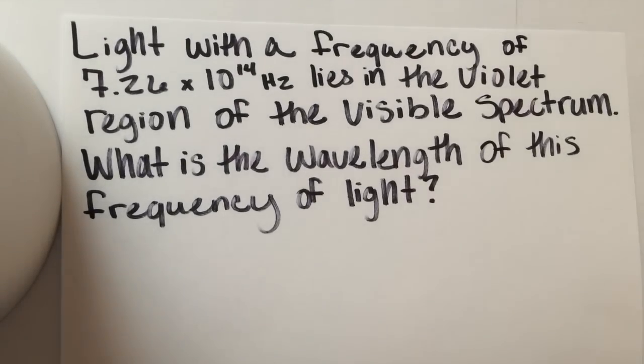Light with a frequency of 7.26 times 10 to the 14th hertz lies in the violet region of the visible spectrum. What is the wavelength of this frequency of light?